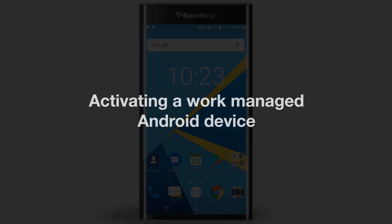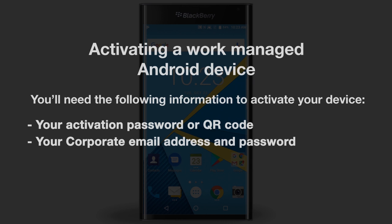Today I'll be demonstrating how to activate a work-managed Android device. Depending on how your administrator has BlackBerry UEM configured, you'll need at least two pieces of information before you can activate your device. You'll either need your corporate email address and BlackBerry UEM activation password or a QR code, and you'll need your corporate email address and password. This information is provided to you by your organization's BlackBerry UEM administrator.